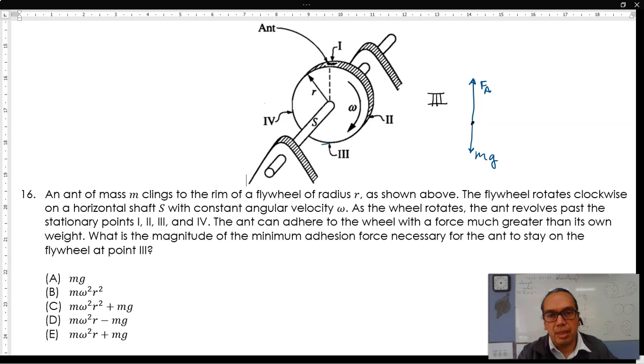And since the ant is moving with an angular velocity omega around the circle, it has a net acceleration and therefore a net force going this way. This net centripetal force is equal to the mass times the radius of the wheel times the angular velocity omega squared. Therefore, FA minus Mg must be equal to mass times radius times omega squared.